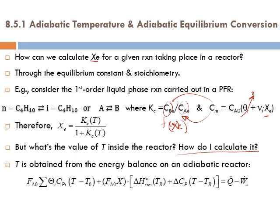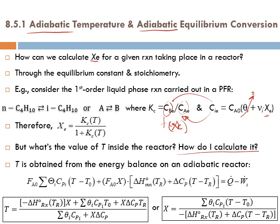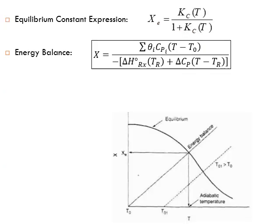We apply the energy balance for an adiabatic reactor, and we can solve for T. In fact, the same equation can also be solved for X. So now we have two equations: one for Xe as a function of T from equilibrium, and one for X as a function of T from the energy balance. Both X's are functions of temperature.